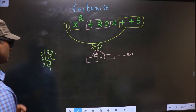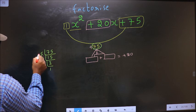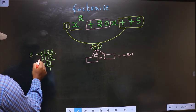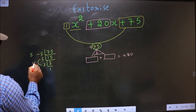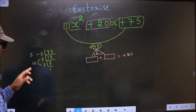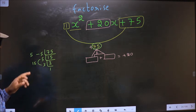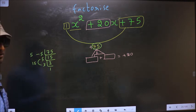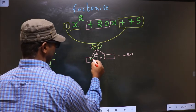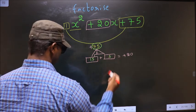The 2 numbers should be: one number is 5 and the second number is 5 into 3, 15. 15 plus 5 is 20, 15 into 5 is 75. So here you write 15 and here you write 5.